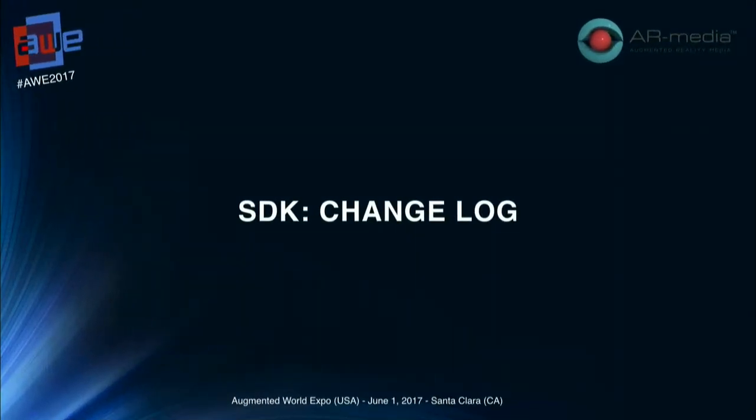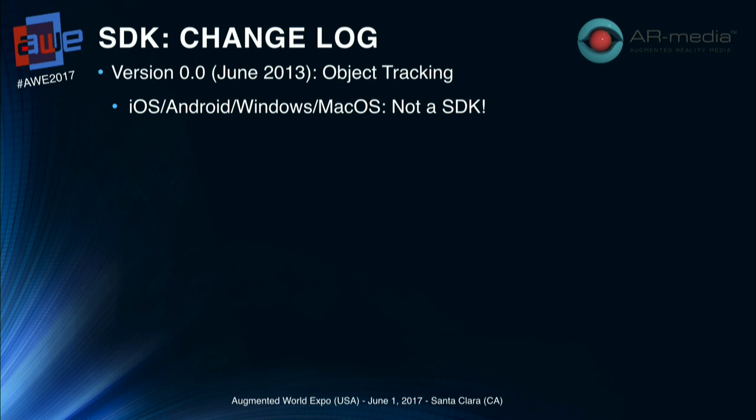Let me talk about the history of the SDK itself, because in this way we will understand what we are talking about and what features we have added over time. The very first version was not an SDK at all — it was our own development because we were in need for a project to track and recognize equipment, and there was nothing on the market that allowed us to do it without using markers or images. So we created this tracking engine, but it was not an SDK; it was meant to be used only by our company.